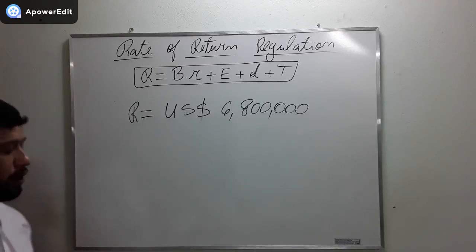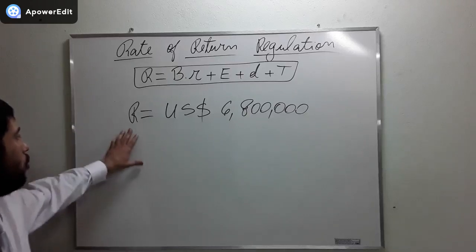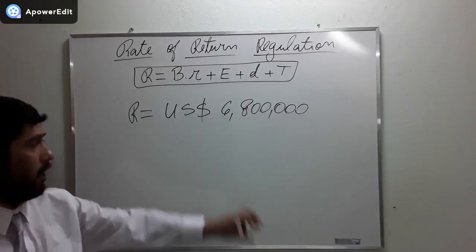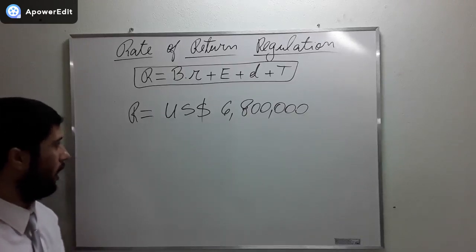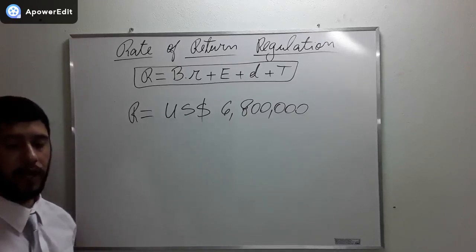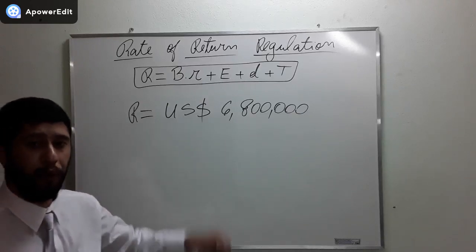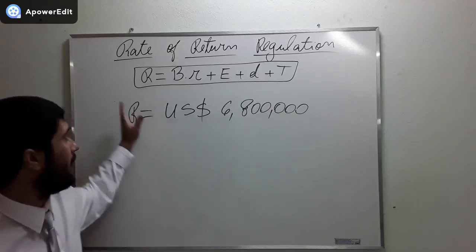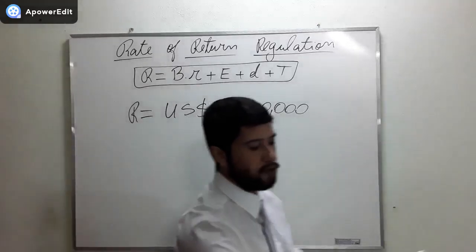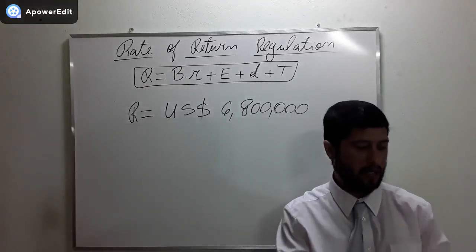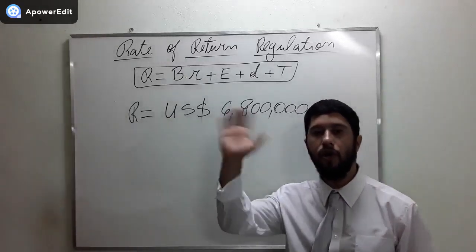This is the allowed revenue for a given regulatory year, upon which the tariff to its customers will be calculated. So the regulator tells the utility, you are allowed to earn this. The revenue of the company is not random, no. The regulator is going to impose it upon the company using this expression that we saw. This was the video that I wanted to make. I hope you guys understood everything. Please give a like to the video. Goodbye!